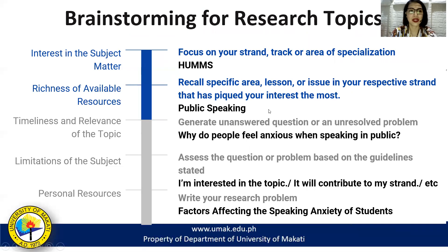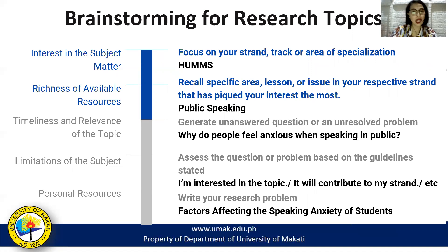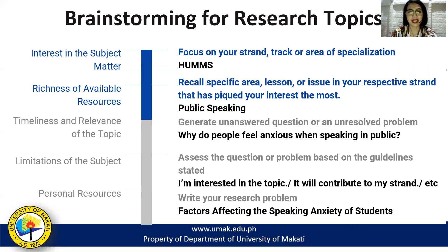Let's have examples. For the first part, you need to focus on your strengths — for 1206HSS it's going to be HUMES, and for 1204HRS it's going to be Hotel and Restaurant Services. Next, recall a specific area, lesson, or issue in your respective strand that has picked your interest the most. For HUMES, it could be public speaking, because in your area of specialization you're asked to do a lot of public speaking or even simple recitations.